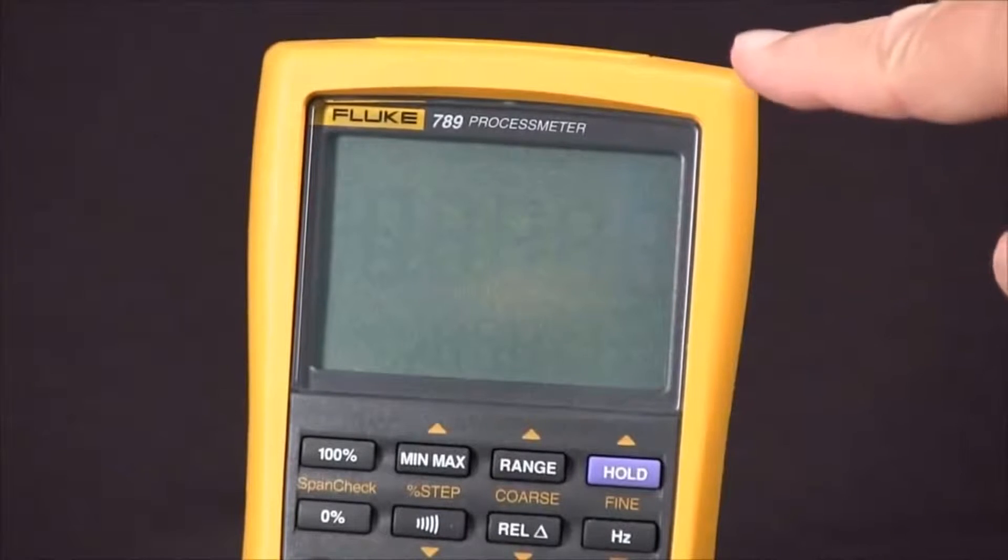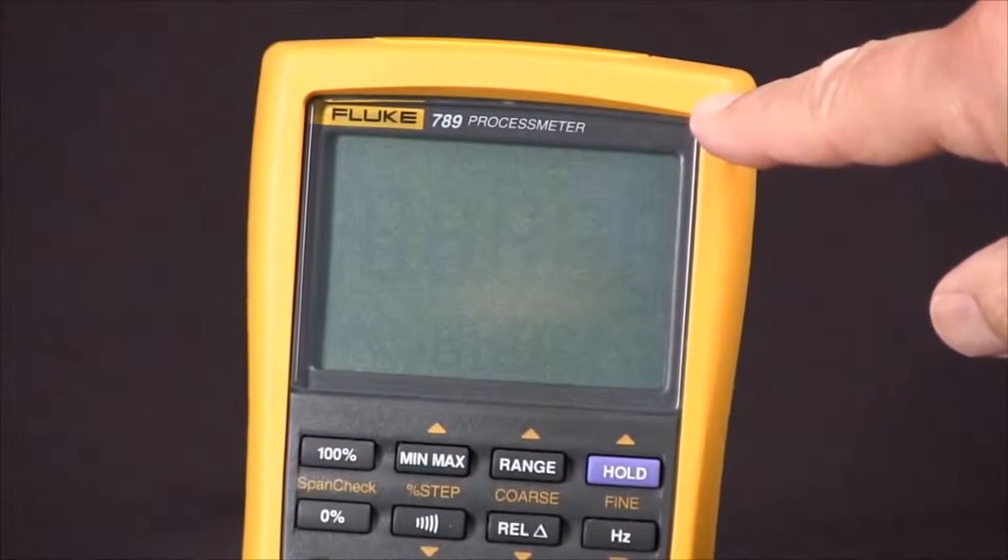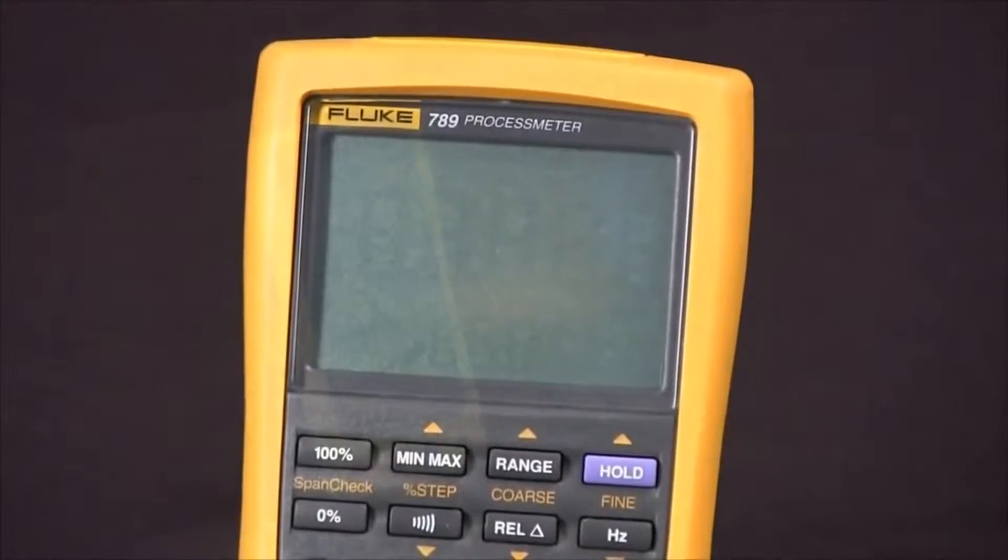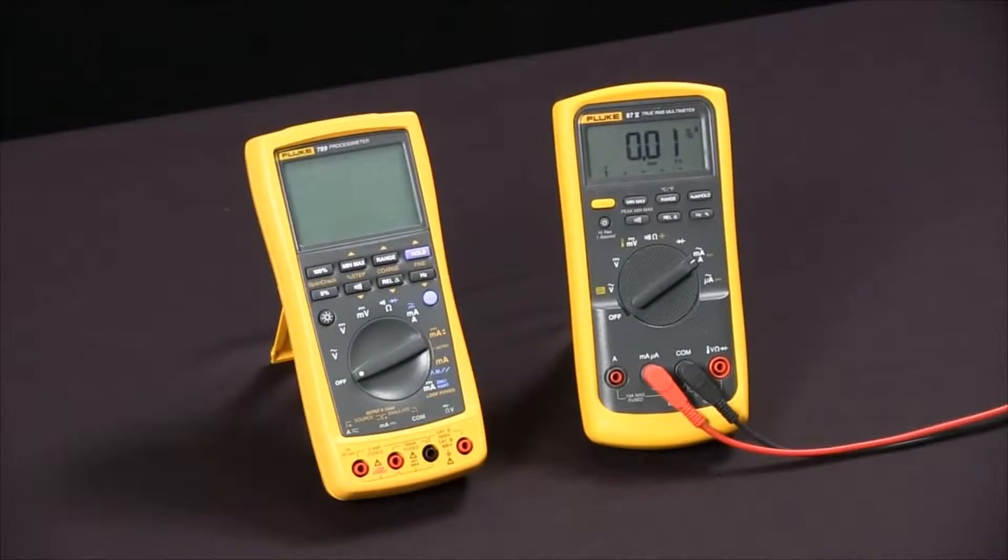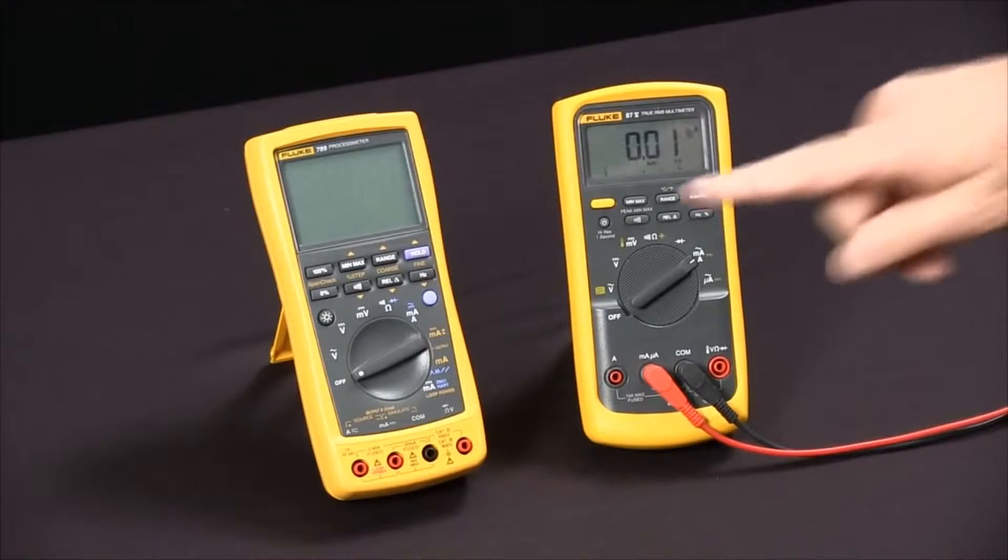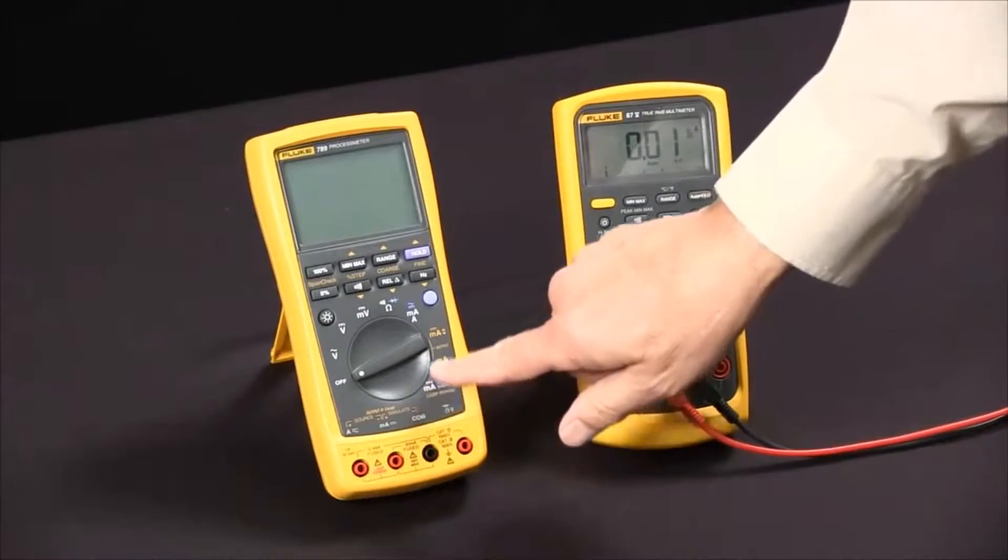To source 4 to 20 milliamps DC current with our Fluke 789 process meter, we're going to use a digital multimeter to measure the current that we're sourcing. You'll notice everything that has to do with sourcing is in orange.